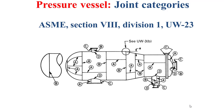Category A includes longitudinal and spiral welded joints within the main shell, within transitions in diameter, within nozzles, and within communicating chambers. Category A also includes any welded joint in formed heads, flat heads, and circumferential welded joints between hemispherical heads and other components of the pressure vessel such as the main shell. It's also important to note that any welded joint in a sphere or spherical shell is considered category A.